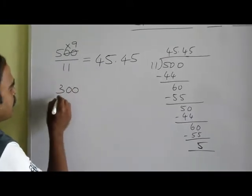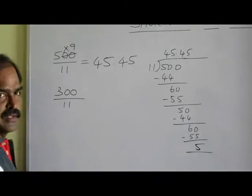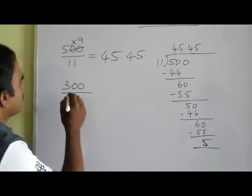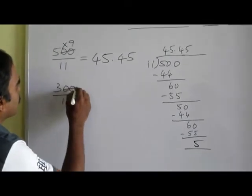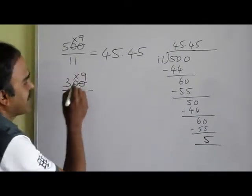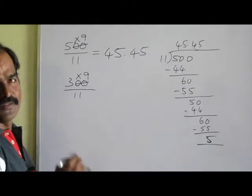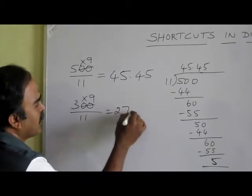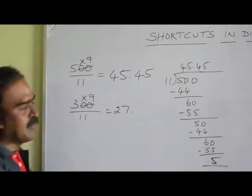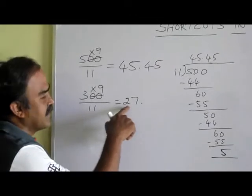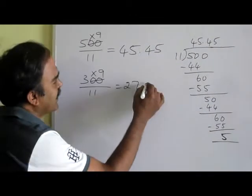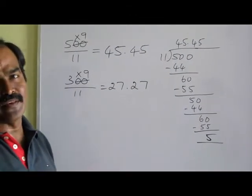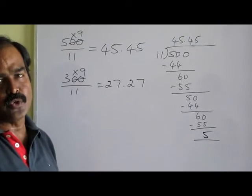300 divided by 11. How to do this in shortcut? Just take out the two zeros and multiply by 9. What is 3 times 9? 27. Now after the decimal point I will repeat the same digits. So my answer is 27.27.